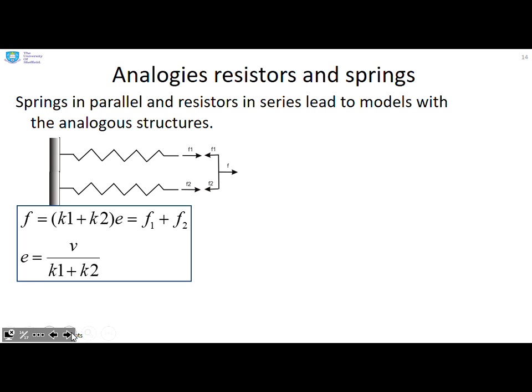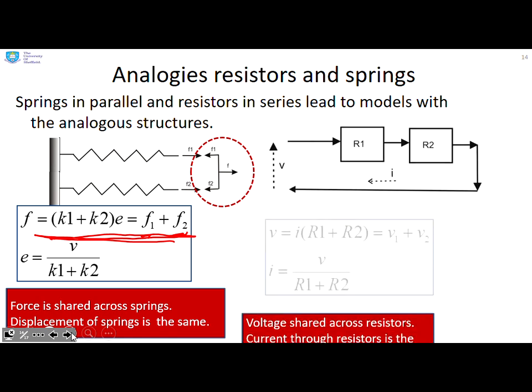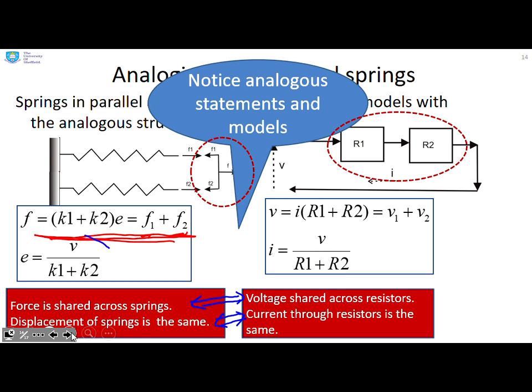What about resistors and springs? Here you can see I've got two springs in parallel and I've written down the equation that you get. I've said the force is shared across the springs and the springs have the same displacement because they're in parallel. That's how I've derived this equation with force one plus force two. What if I've got two resistors in series? Here you see the voltage is shared across the resistors. The key thing I want you to notice here is the analogous statements. Force is shared across springs. Voltage shared across resistors. Displacement of the springs is the same. Current through the resistors is the same. You've got analogous statements and models. Look at this model here. Look at this model here. You can see they've got the same mathematical structure.